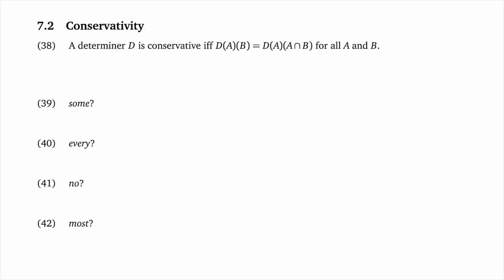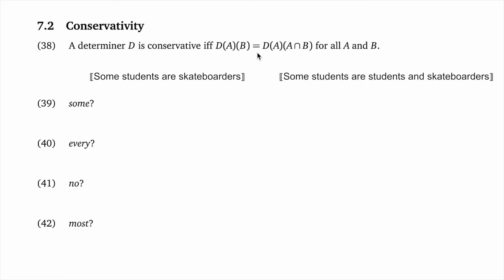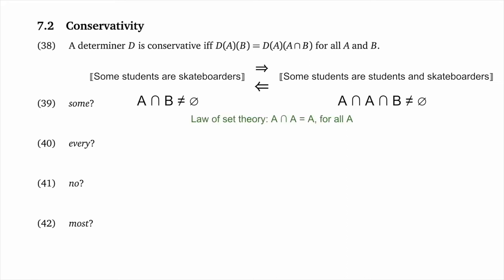For illustration, let's begin with some. We create two sentences: 'some students are skateboarders' and 'some students are students and skateboarders.' The second feels redundant, but these two sentences each entail the other — and the redundancy comes from the conservativity of the meaning. In terms of the formal theory, we begin with A intersect B on the left side, and on the right side we get A intersect (A intersect B). Since A intersect A is just A again, the right side simplifies to A intersect B, and they're identical.